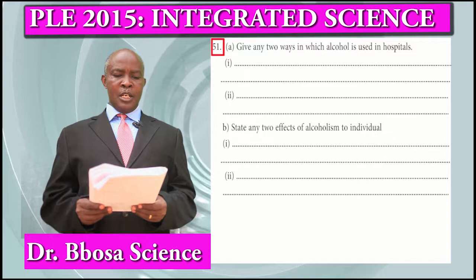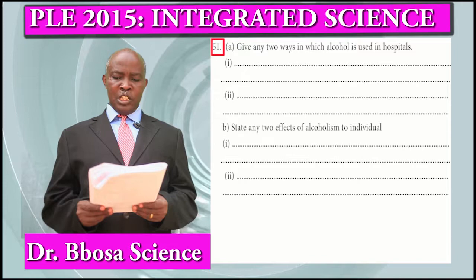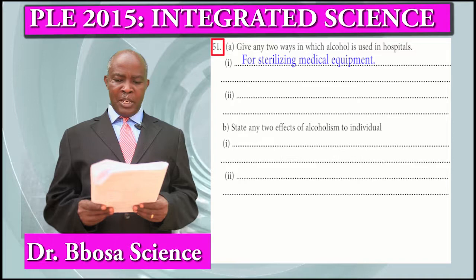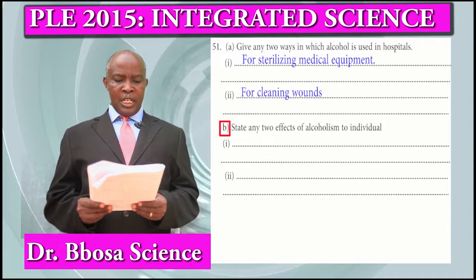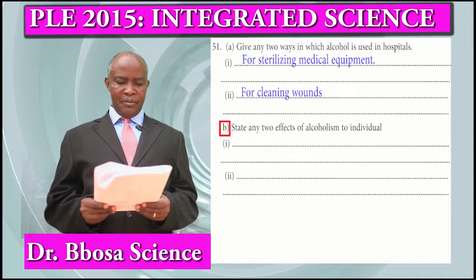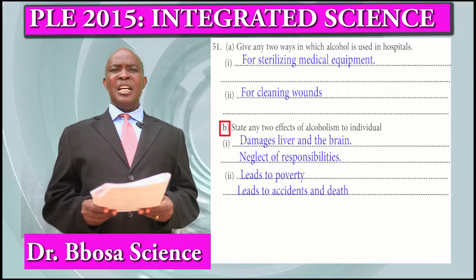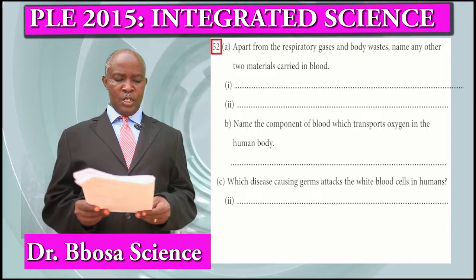Question 51a: Give two ways in which alcohol is used in hospitals. For sterilizing medical equipment. For cleaning wounds. Part B: State two negative effects of alcoholism on an individual. It damages the liver and brain. It leads to neglect of responsibilities. It leads to poverty. It leads to accidents and death.